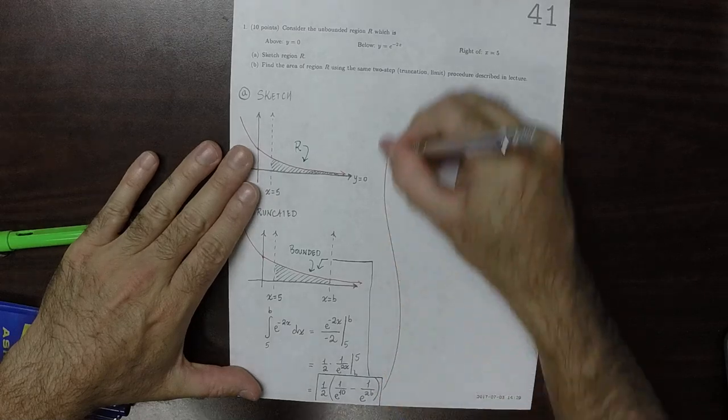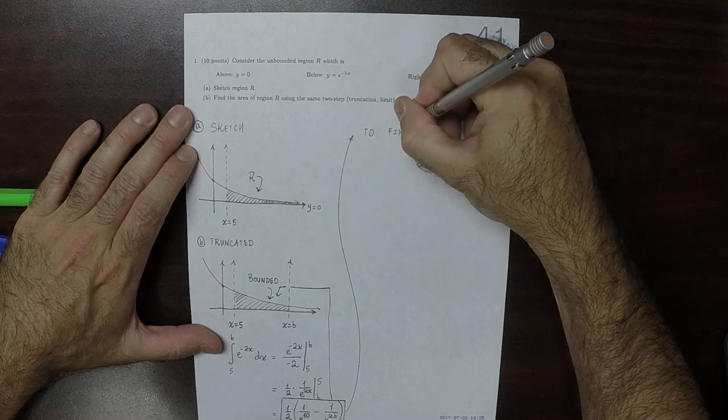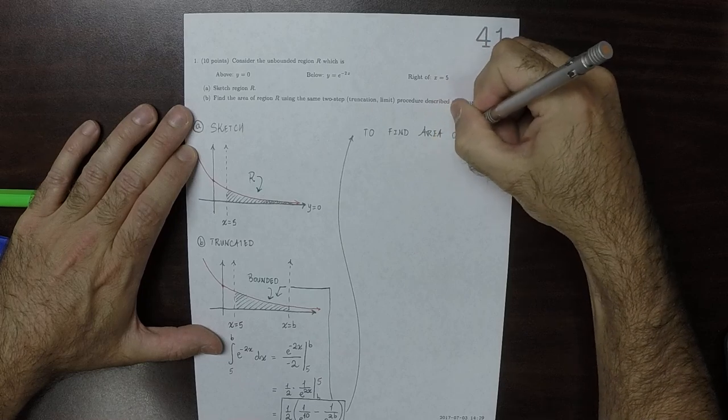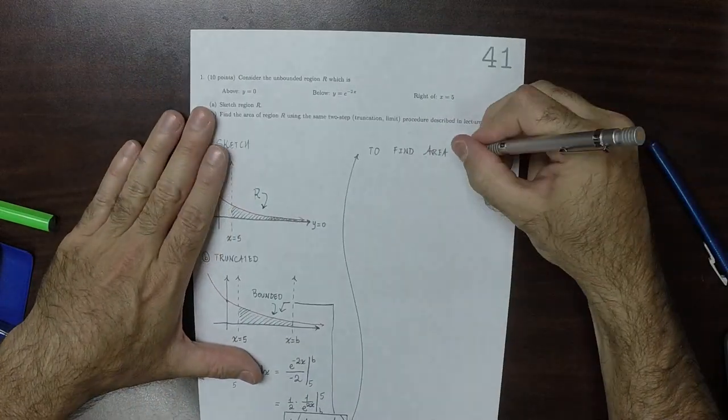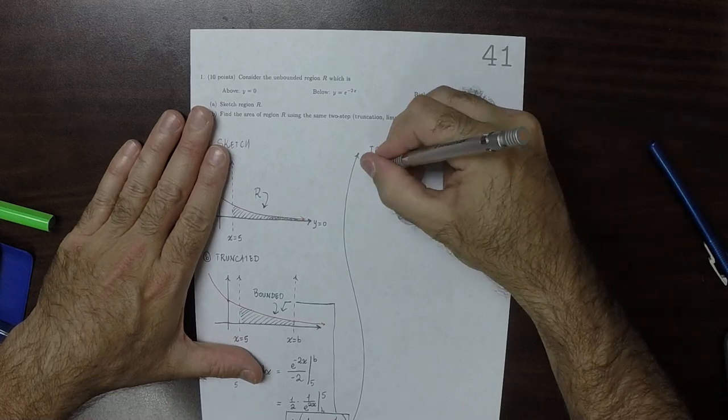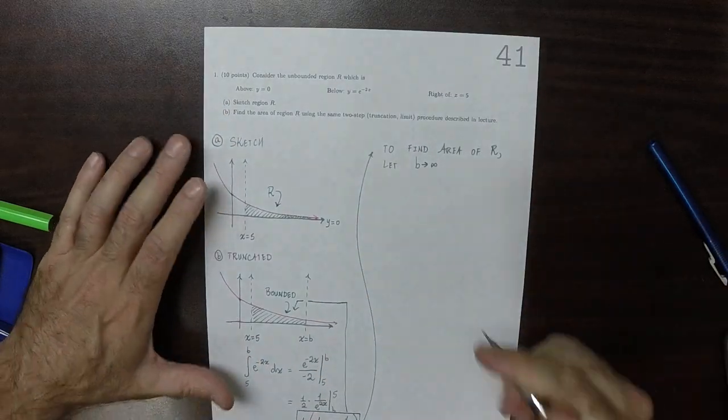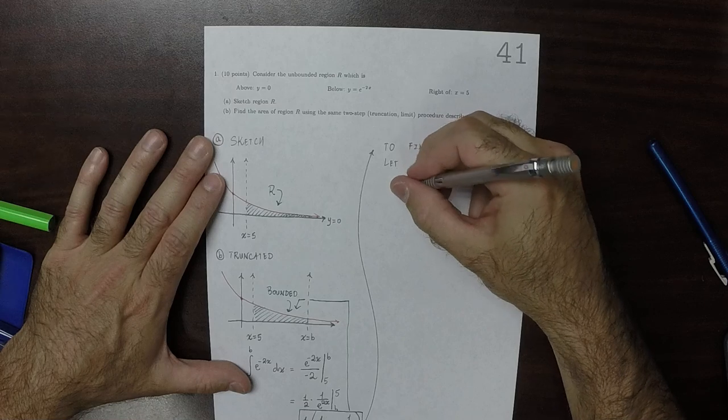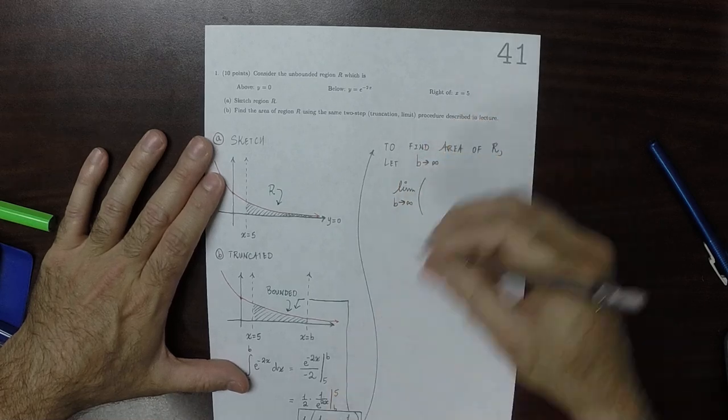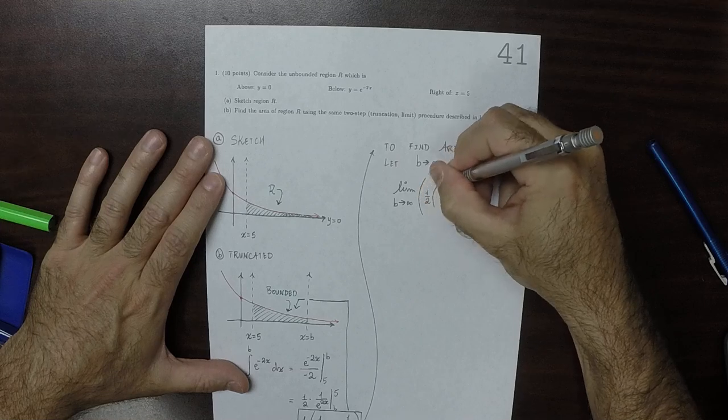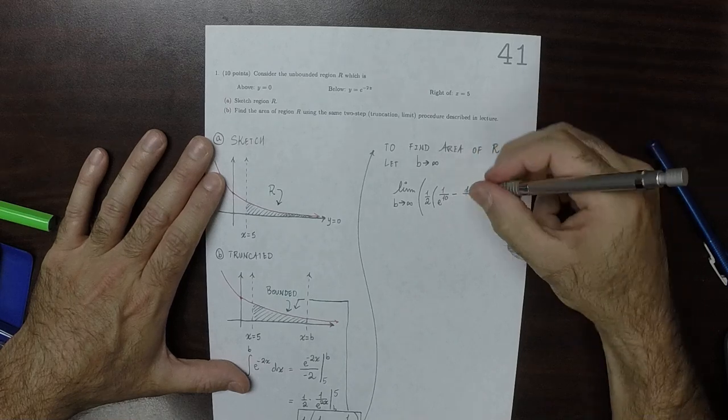So now, to find the area of R, we'll let B go to infinity. That's to say, let this fence coast go all the way to the right. So the area of R is the limit as B goes to infinity of that 1 half, 1 over exponential of 10 minus 1 over exponential of 2B.